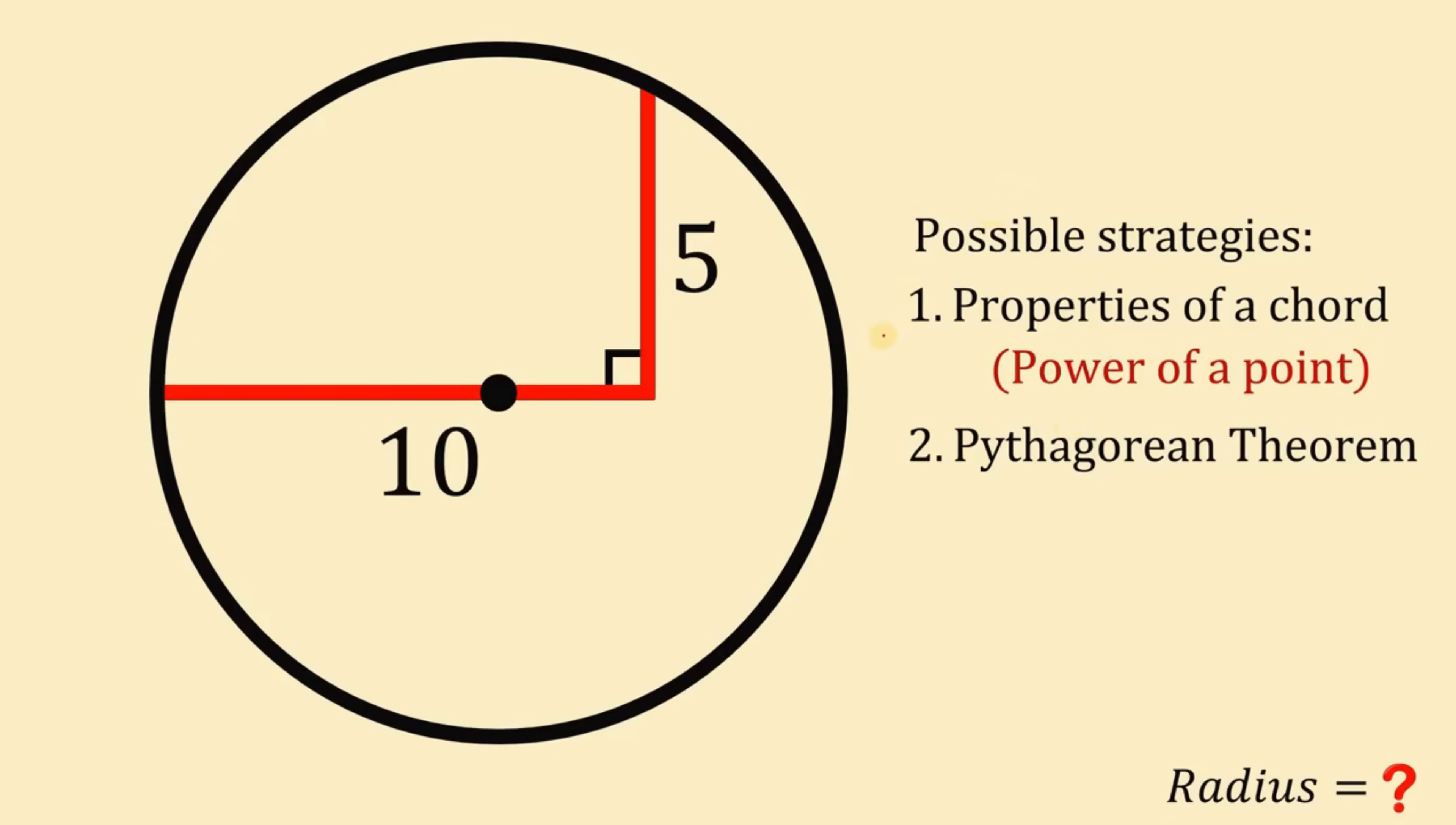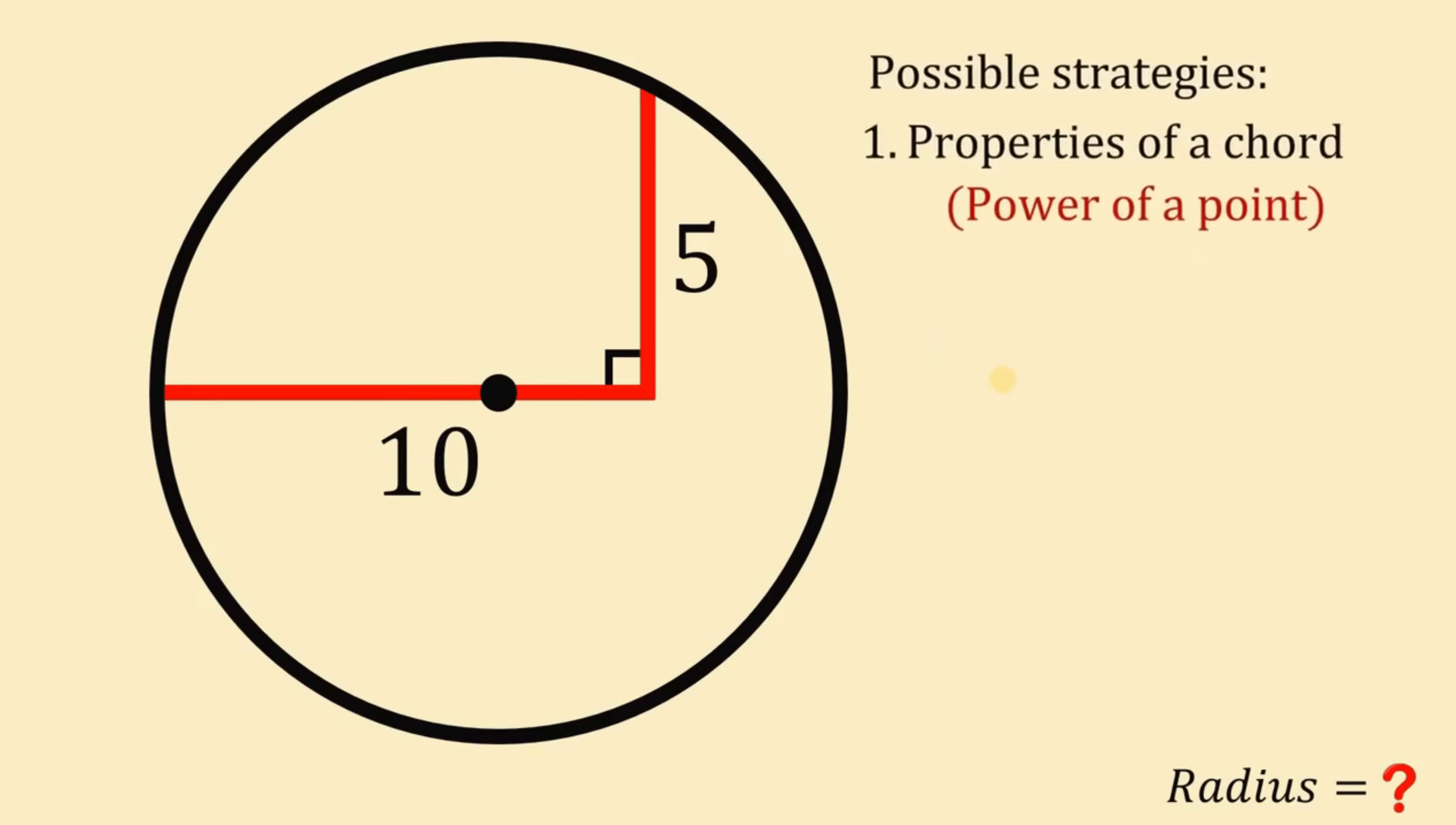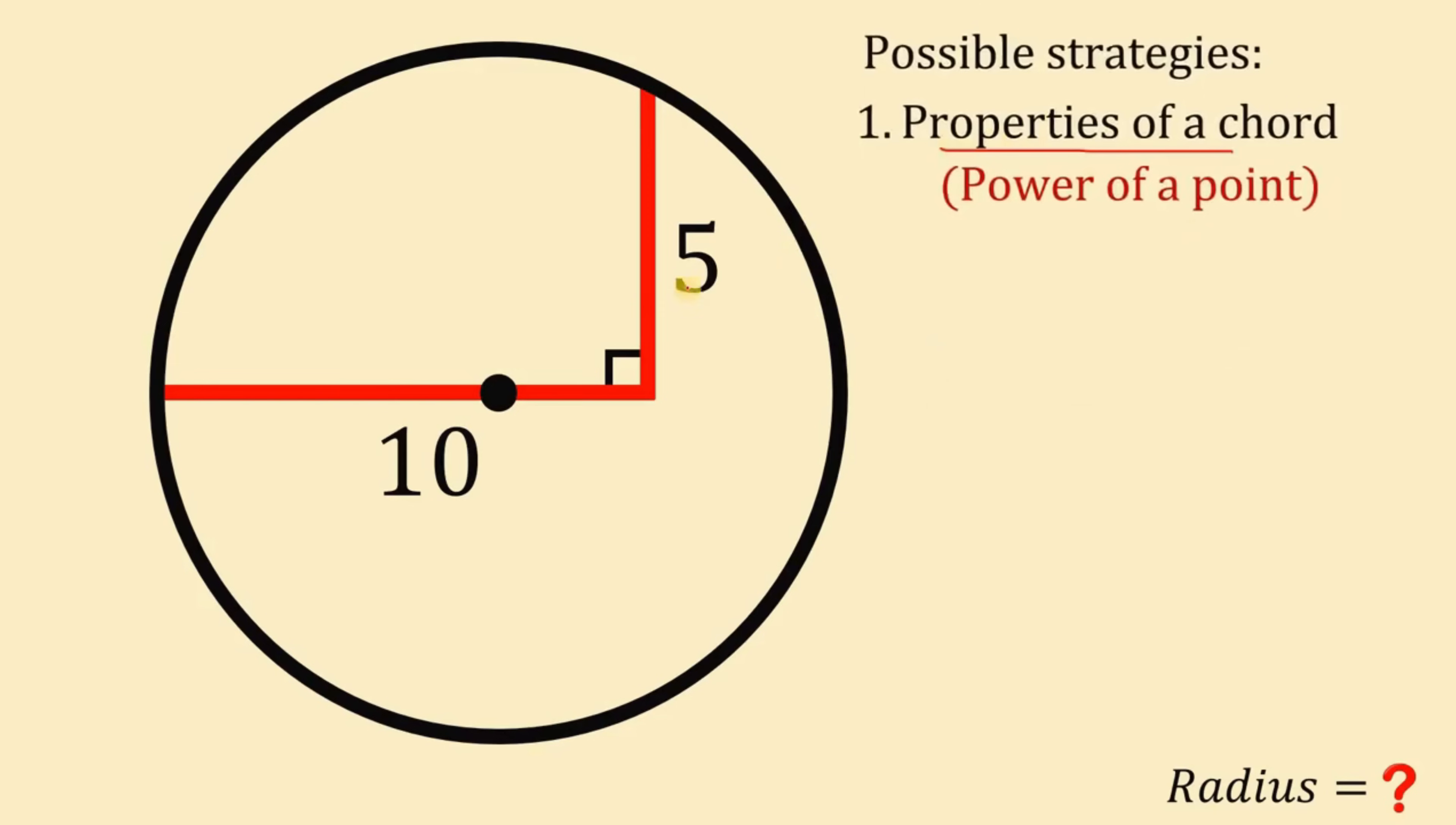Now let's start with our first strategy which is the use of properties of a chord and power of a chord. Now, to use this strategy, what we are going to do is to complete this segment that measures 5 to make this a chord. Now, according to one of the properties of a chord, perpendicular drop from the center divides a chord into two equal parts.